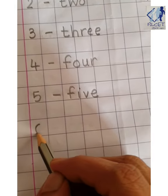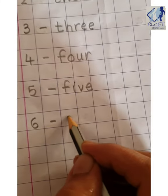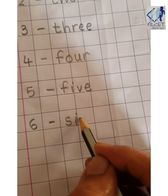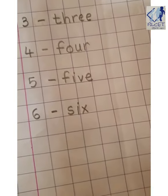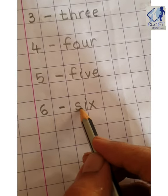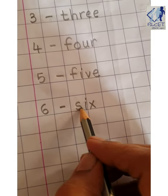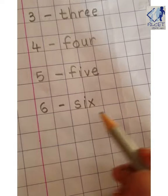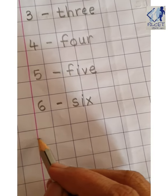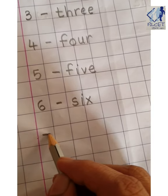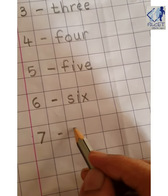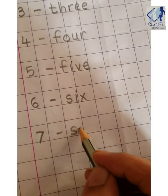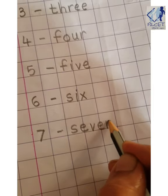Again leave 1 box. Write 6. S-I-X. And children, every time you start the letter, you have to start it with small letter. Then again leave 1 box. Write 7. Put a dash. S-E-V-E-N.